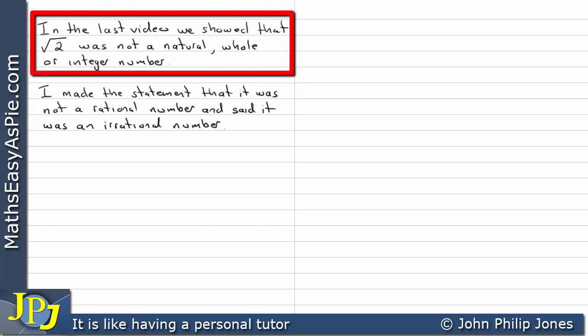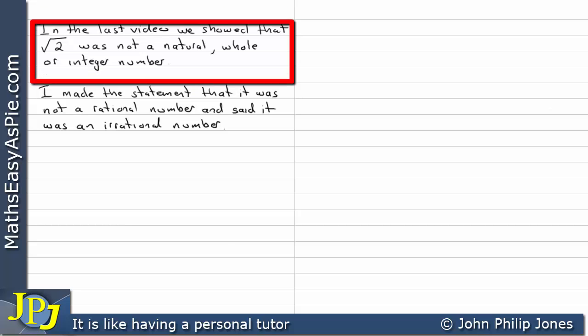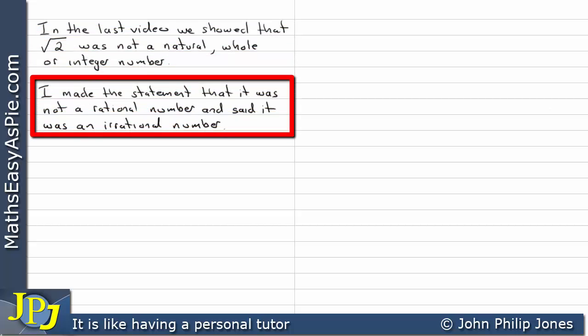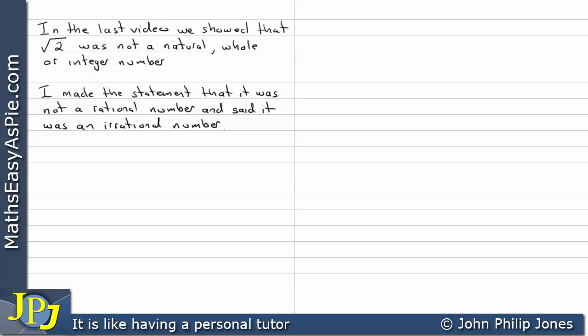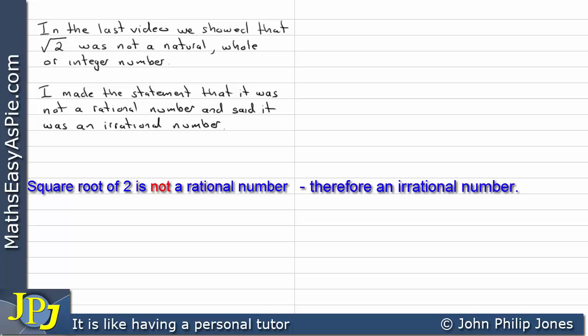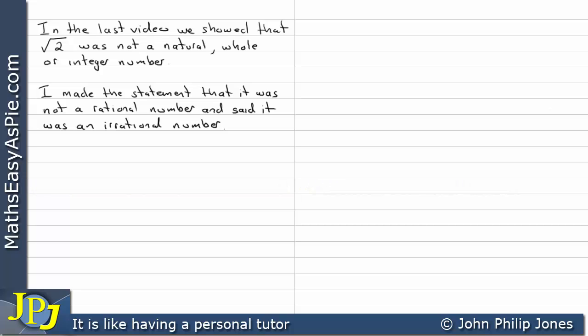In the last video we showed that the square root of 2 was not a natural, whole, or integer number. I made the statement that it was not a rational number and said it was an irrational number. This video is going to forward a proof that shows that the square root of 2 is indeed not a rational number and therefore an irrational number. We're going to achieve this by making the statement right at the very beginning that the square root of 2 is a rational number and then show why it can't possibly be a rational number.